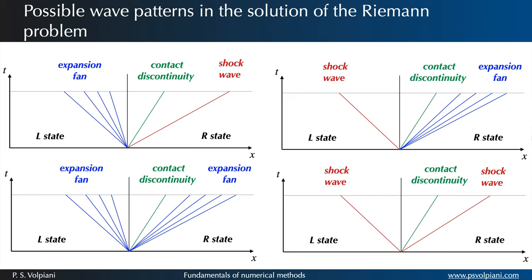What type of waves are actually present in the solution will depend on the initial conditions of the Riemann problem. When we break the membrane, the discontinuity between the two initial states breaks into leftward and rightward moving waves, which are separated by a contact surface. Each wave pattern is composed by a contact discontinuity in the middle and a shock or a rarefaction wave at the left and the right sides.